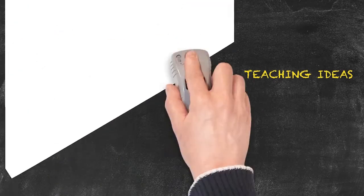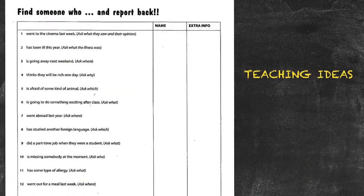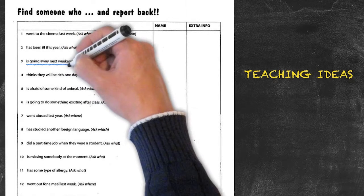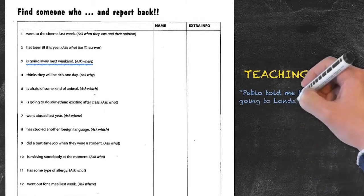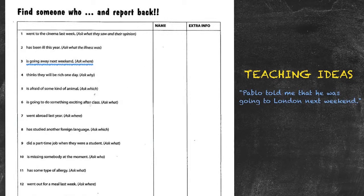Let's have a look at some teaching ideas for reported speech. In this teaching idea, we'll have students going around asking their classmates for various bits of information. The questions and answers will be in direct speech. At the end of the activity, the key point will be having students report back the answers of what they previously got. In this situation, we have the question: 'find someone who is going away next weekend.' The student would report back: 'Pablo told me that he was going to London next weekend.'